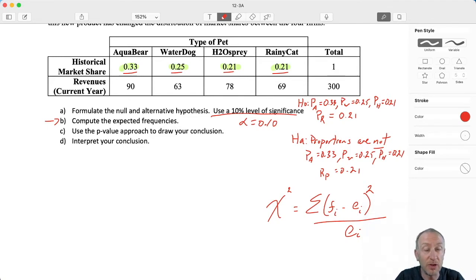So if the null is true, well then, what we would expect is for those proportions to be the same as they were before the introduction of this new product. So total revenues for all of the firms were 300, 300 million, whatever you want it to be. If the null hypothesis is true, well then, 0.33 or 33% of that is what Aqua Bear would have acquired. So 0.33 times 300. So our expected value there would be $99.